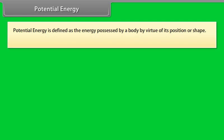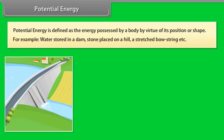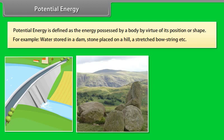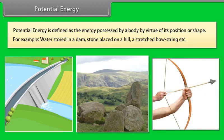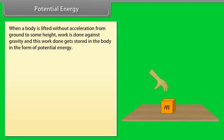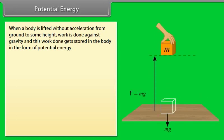Potential energy is defined as the energy possessed by a body by virtue of its position or shape. For example, water stored in a dam, stone placed on a hill, a stretched bow string. When a body is lifted without acceleration from ground to some height, work is done against gravity, and this work done gets stored in the body in the form of potential energy.